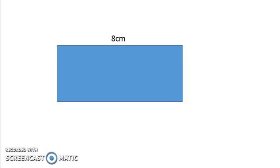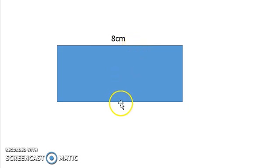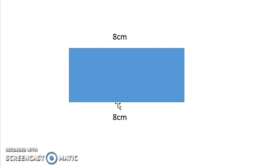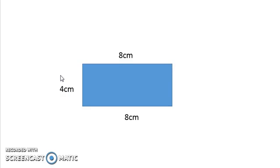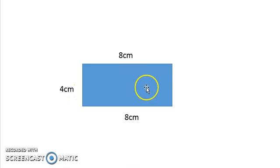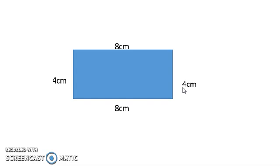Let's look at this rectangle. One side of this rectangle measures 8 centimeters, so the opposite side or the parallel side will also measure 8 centimeters. The width of this rectangle is 4 centimeters. Since both sides are the same width, the opposite side will also measure 4 centimeters.